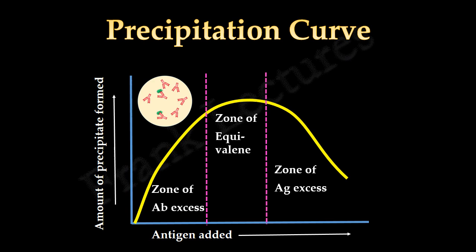In the zone of antibody excess, no aggregation of antigen occurs, hence no lattice formation.